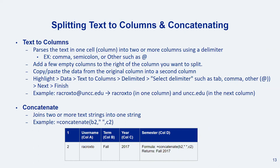The opposite of that is concatenating — that's where you're joining two or more text strings together into a single string. Concatenating also allows you to add spaces, text, commas, or even a word or a dash. For example, I have fall in column B, year in column C, and I concatenate bringing those two fields together and add a space between them.